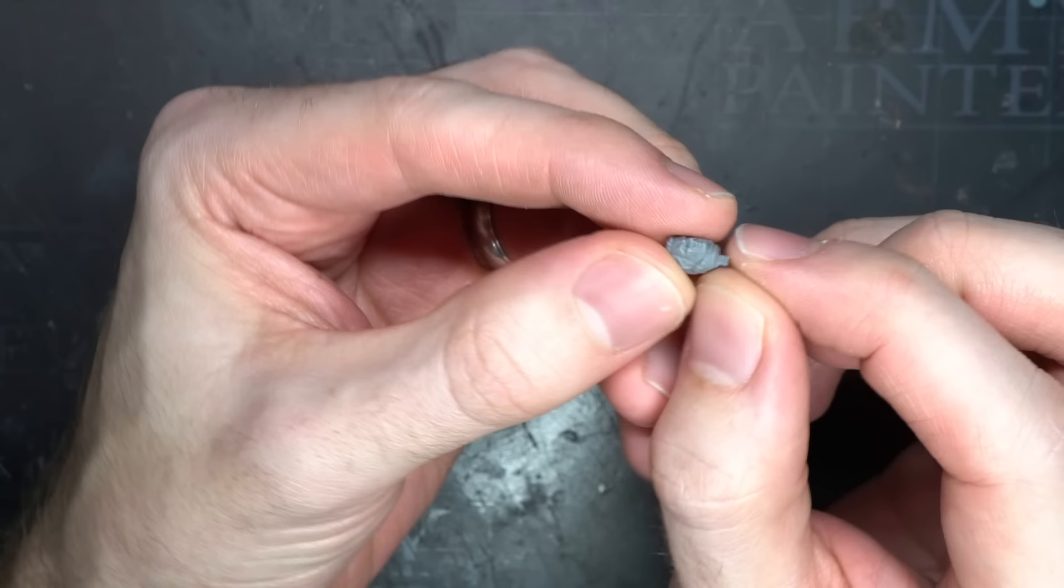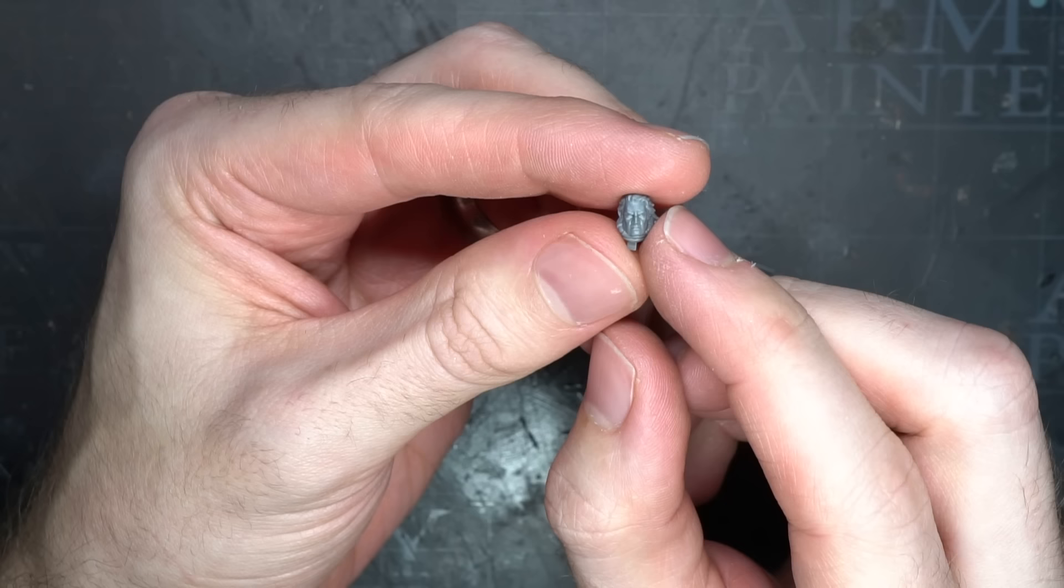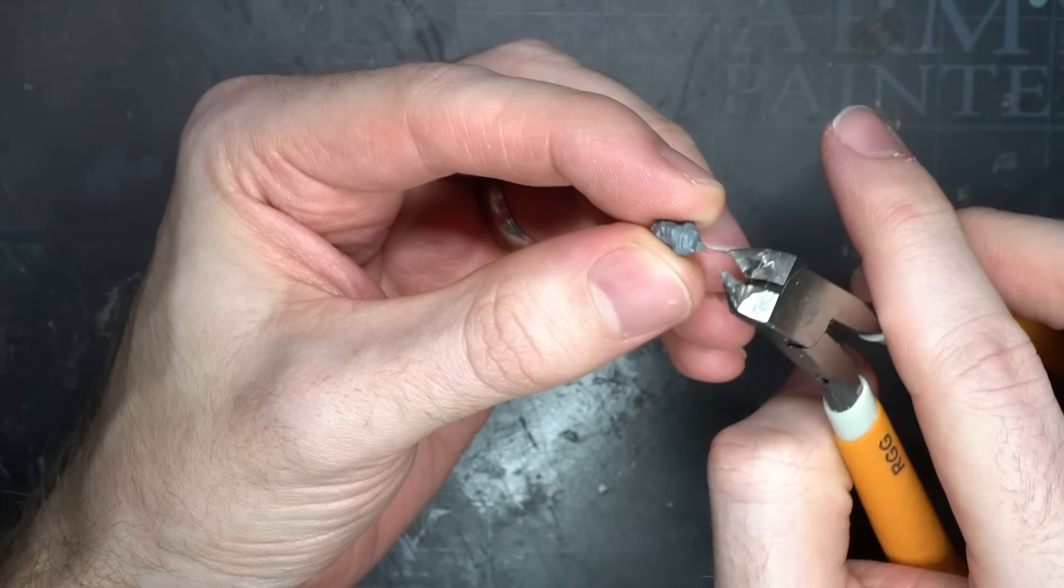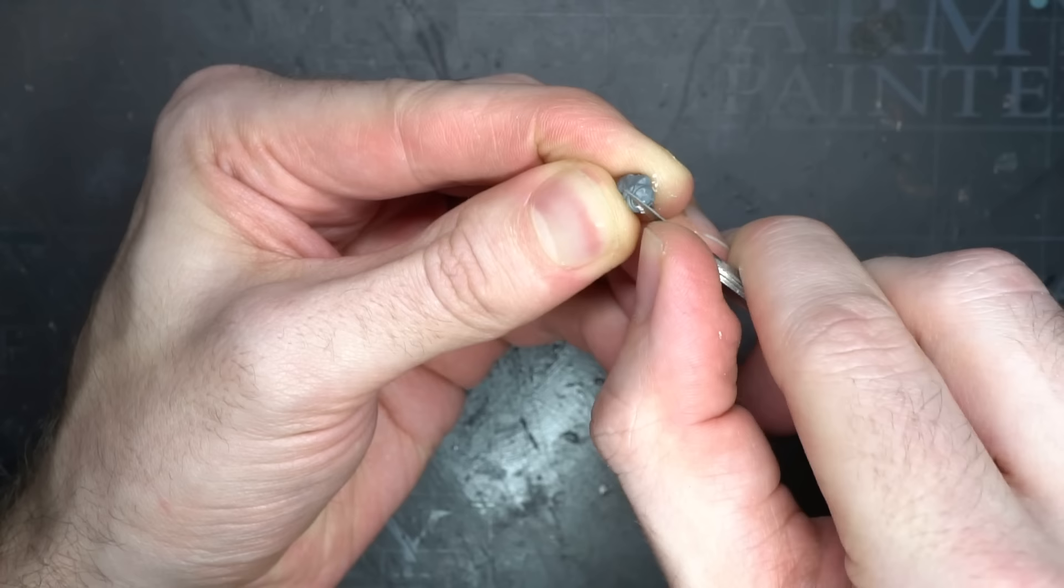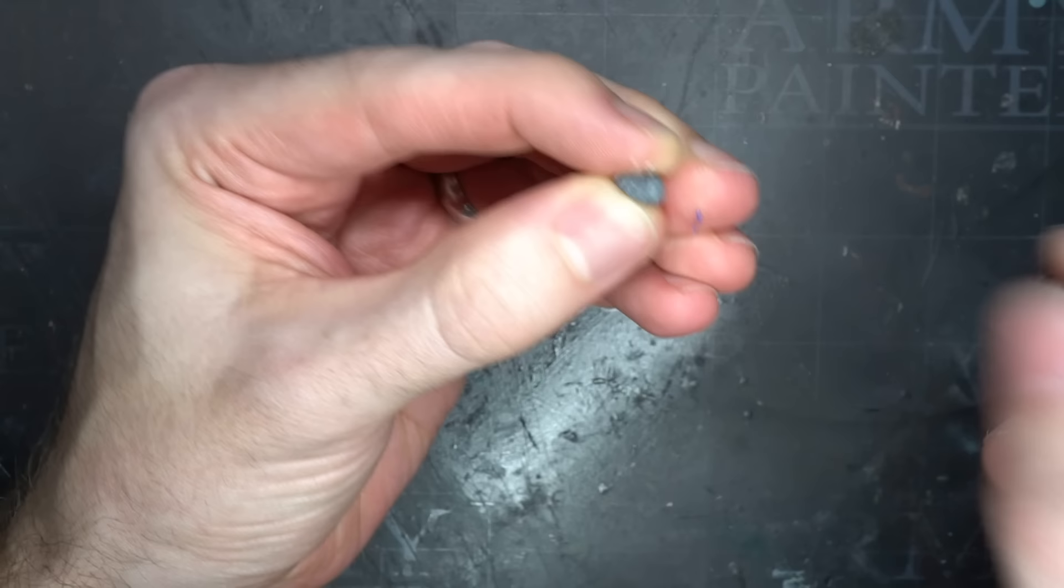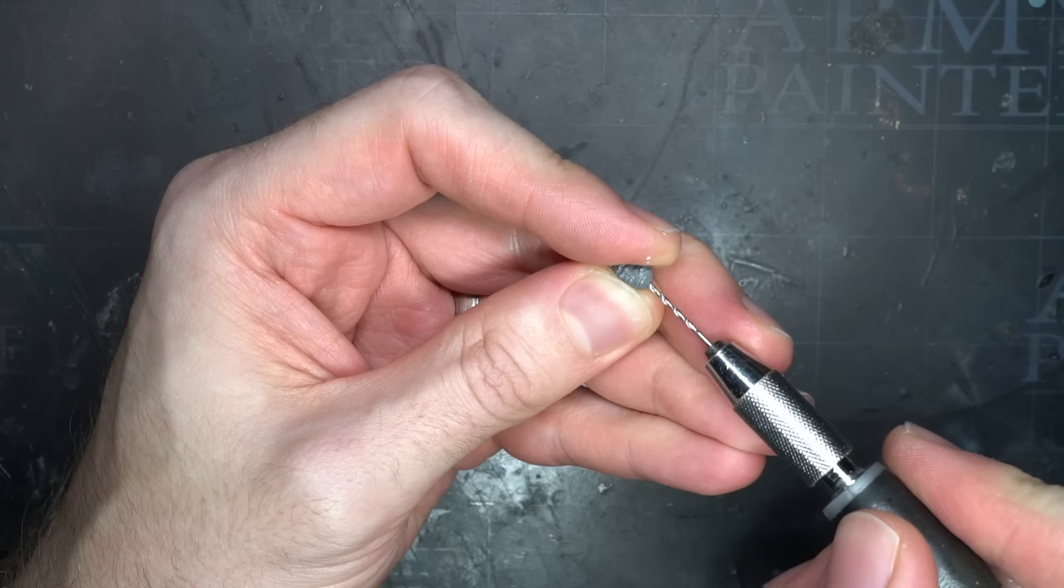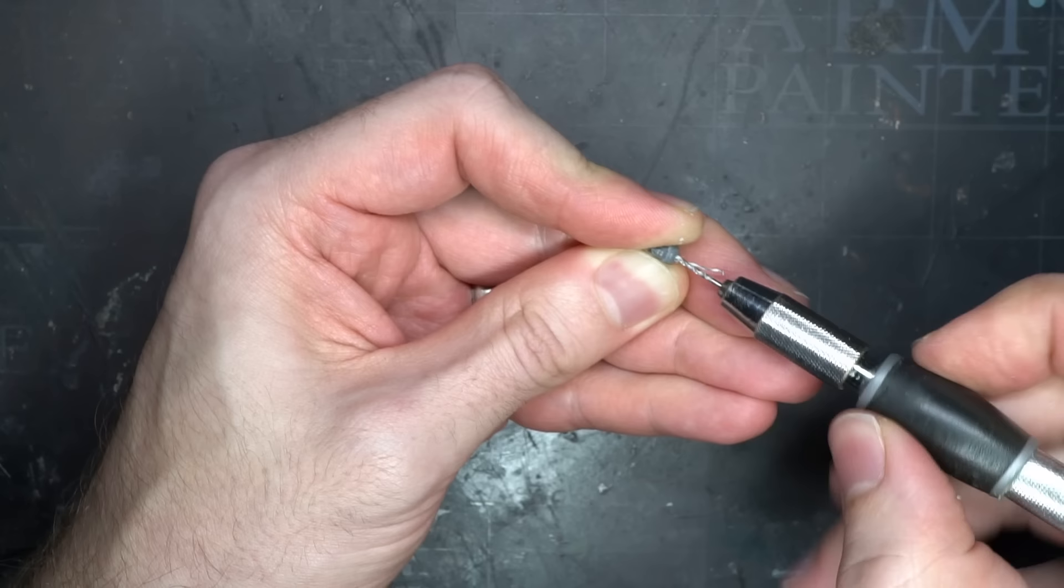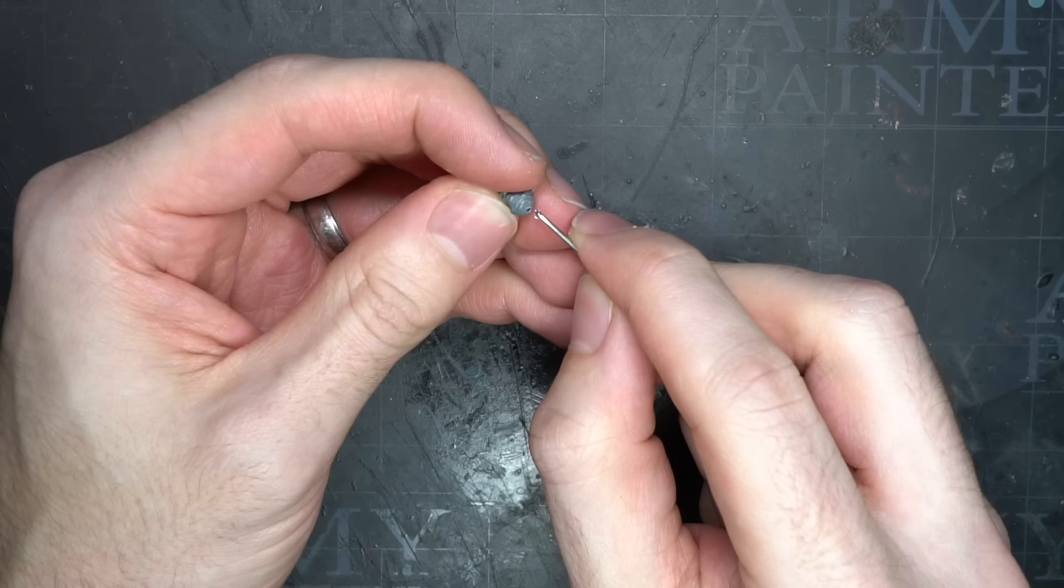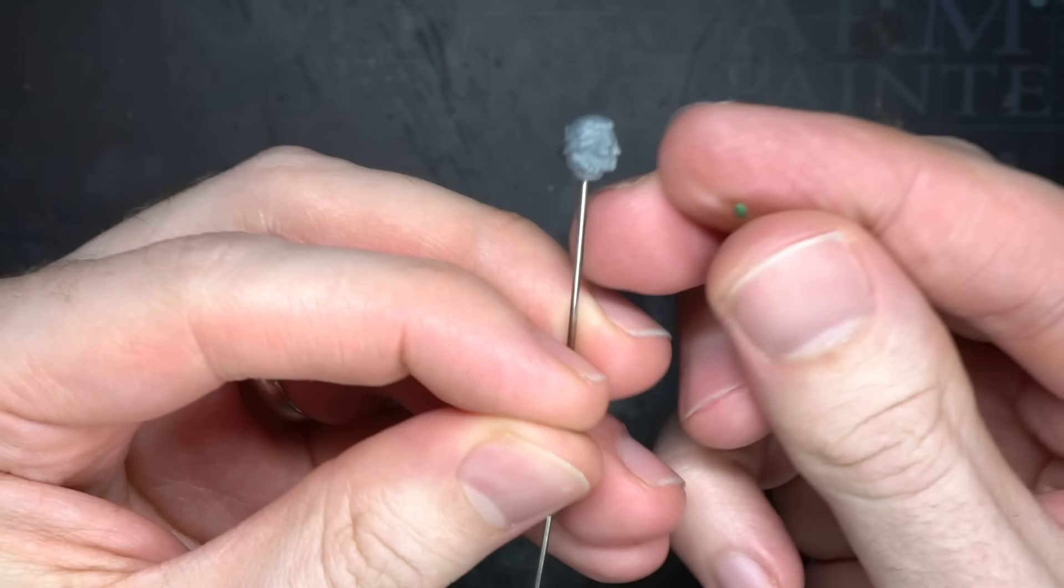While I waited for the green stuff on the cloak to cure, I began to work on the head. I took one of the bare heads from the Blade Champion's kit and to give it a more aged appearance, I chose to add some facial hair. But before I brought in the green stuff, I first removed the tab from below the neck using my clippers and knife. This would give me much more freedom when I came to attach the head and allow me to adjust the angle and position as I saw fit. The head was a little too small to easily hold though, so to make it easier to add the putty to and to paint later on, I decided to add a wire to hold it. I used my pin vise to drill a small hole into the base of the neck and glued a length of 1mm thick wire into place.